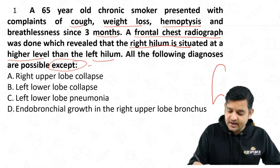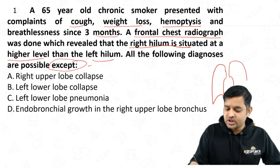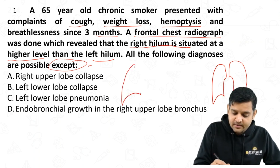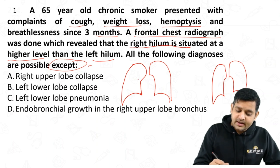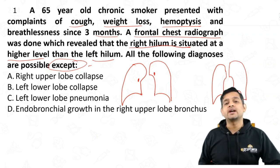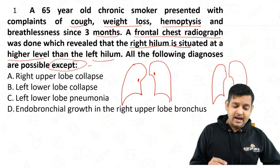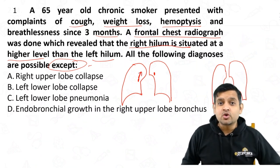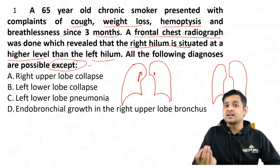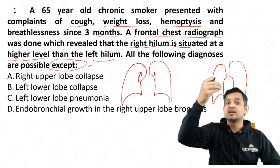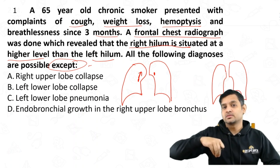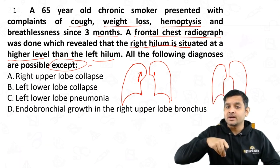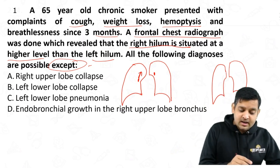If I draw the chest X-ray, normally the right hilum is lower in comparison to the left hilum. But here the right hilum is higher. What could be the reason? Either the right hilum is pulled up, or the left hilum is pulled down — those are the two possible reasons.